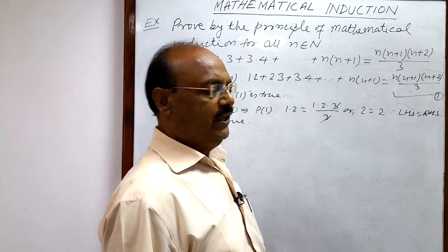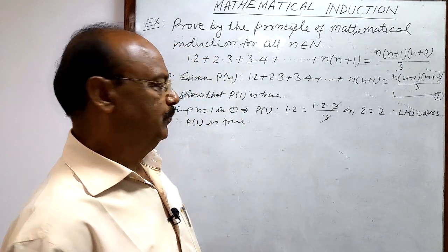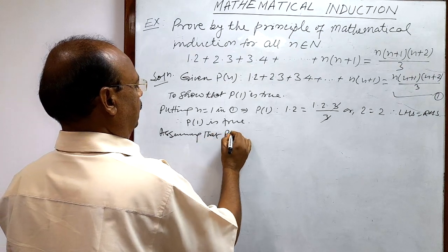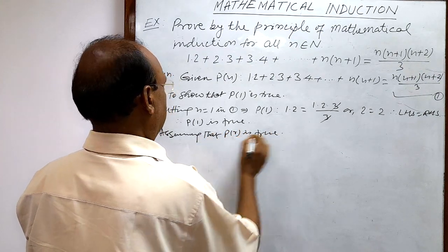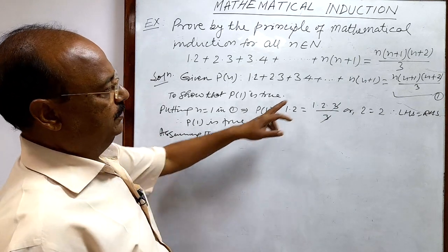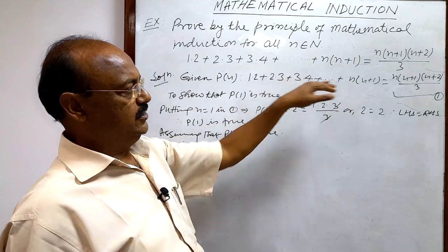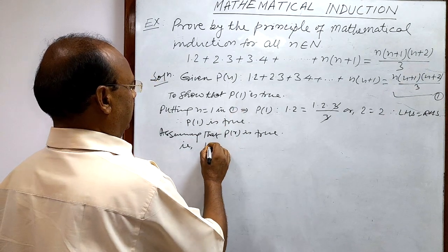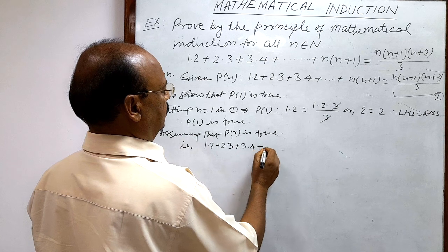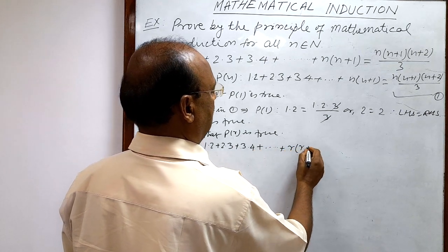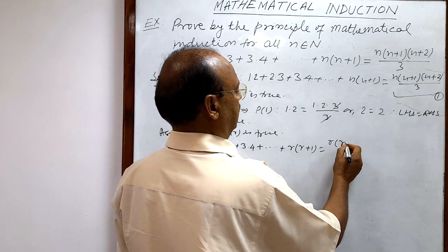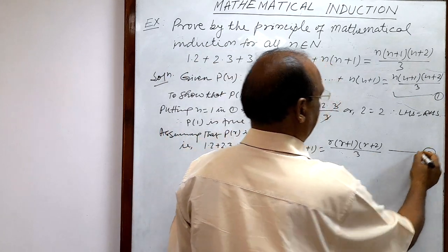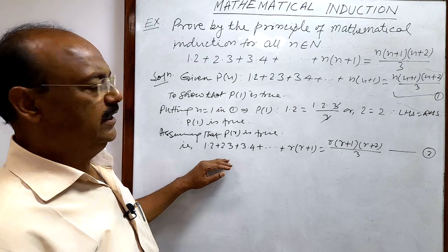Second step: we assume that P(r) is true. That is, replacing n with r, we assume: 1·2 + 2·3 + 3·4 + ... + r·(r+1) = r(r+1)(r+2)/3. We call this relation number 2.